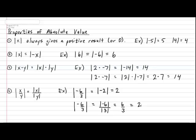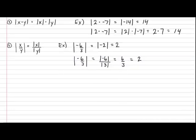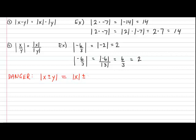And these are the four main properties of absolute value. Now, along with these four properties, there is one humongous danger. So in the important color, I would like you to put: Danger. The danger involves the absolute value of two numbers being added or subtracted together. Some people may believe that this can equal the absolute value of one number plus or subtract the other number. But in fact, this is actually wrong — they are not equal to each other.